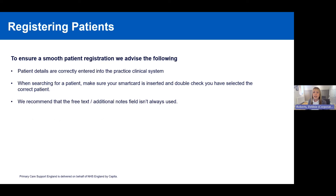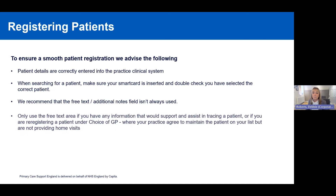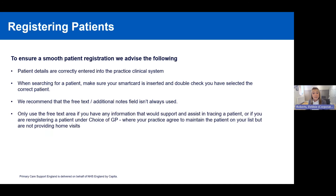We also recommend that the free text area and the additional North field isn't always used — it's not mandatory, and text entered in this field can stop a registration going through efficiently. Only use the free text area if you have information that would support tracing a patient, or if you're registering a patient under choice of GP where your practice agrees to maintain the patient on your list but is not providing home visits.